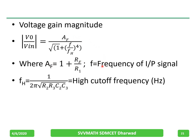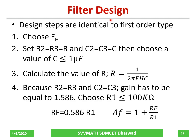The voltage gain magnitude equation should be noted — pause and review it. The gain is given by 1 plus Rf/R1. The design steps are similar to the first order: choose f_H, set R2 = R3 = R and C2 = C3 = C, choose C less than or equal to 1 µF, and calculate R using the same equation. One important requirement: the gain must equal exactly 1.586. Choose R1 less than or equal to 100 kΩ, then choose Rf such that gain = 1 + Rf/R1 = 1.586.